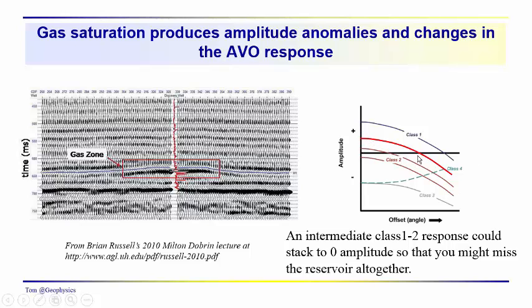This is an example of how amplitude variation with offset — when you stack all the traces together — changes the amplitude you might predict based on a simple calculation of the reflection coefficient using velocities and densities from your sonic and density log. This is one of the key reasons we look at AVO.